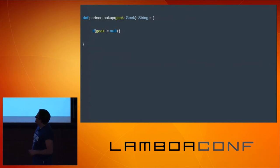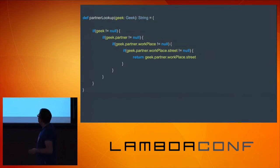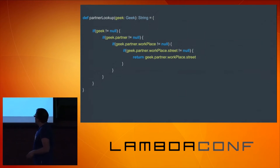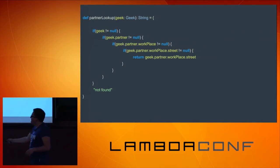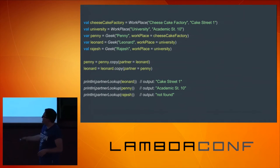So we create a new method partner lookup, which takes a geek. We check if it's null, and if partner's null — we're slowly building this pyramid of doom, right? And if we have the result, we just return it. Without the result, we say not found.